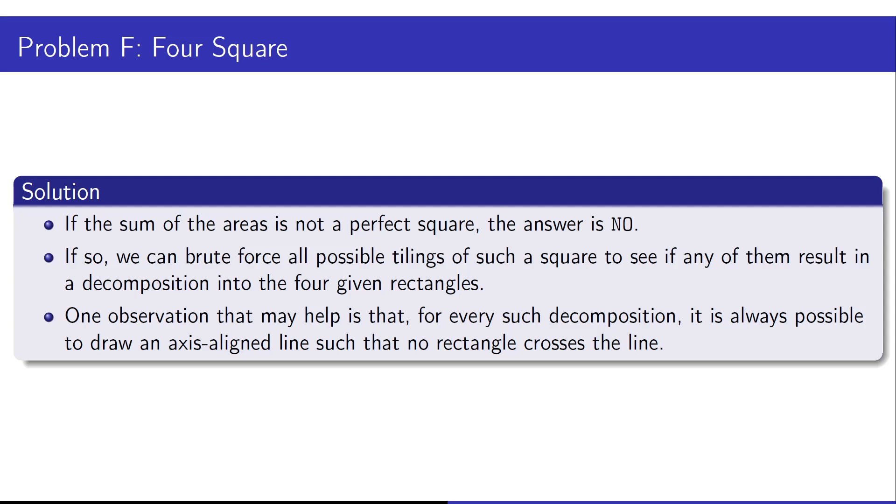When implementing this one observation that teams might find helpful is that you can always draw a line for the square such that for any given rectangle the rectangle is on one side of the line.